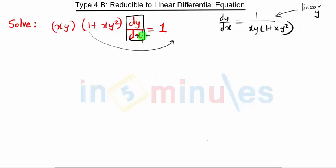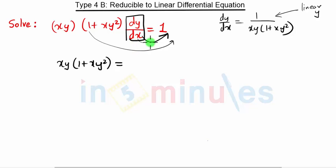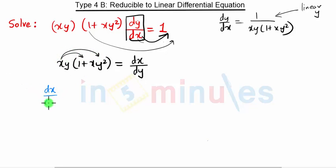So what we are going to do is take this term — xy·(1 + xy²) — to the other side. When it goes over, dx goes to the numerator and dy to the denominator, giving us dx/dy. If we multiply the terms inside the bracket, we get dx/dy = x·y + x²·y³.